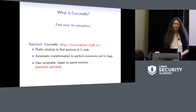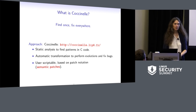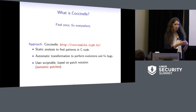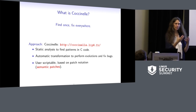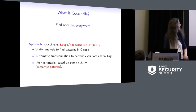What is Coccinelle? The idea behind Coccinelle is sort of 'find once, fix everywhere.' You're looking through your code, you see something mysterious, something looks wrong, something you just don't understand, and you want to find more examples of that situation to understand it better, or you might realize it's completely incorrect. The Linux kernel has 13 million lines of code, so surely someone else has had the same issue as well.